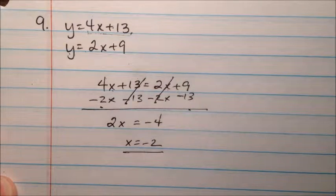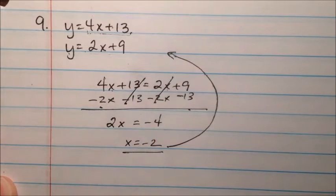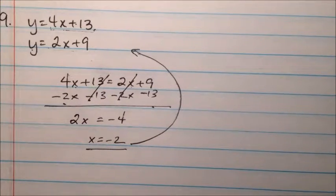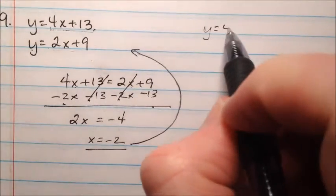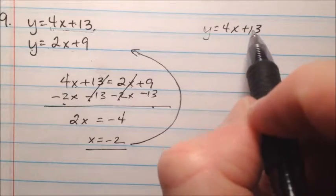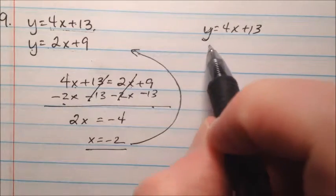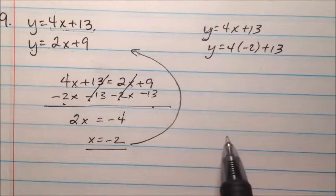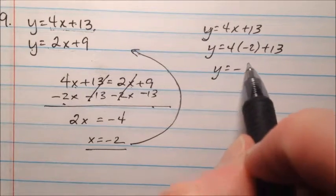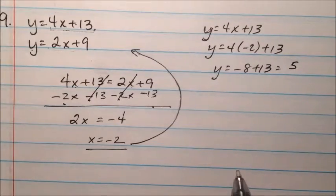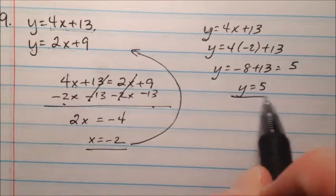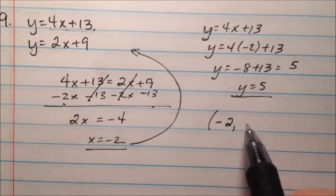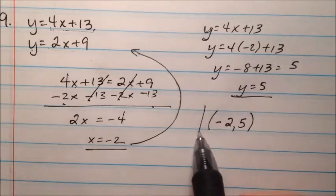Now that we have the value for x, we can go ahead and plug that back into one of those equations. So if y equals 4x plus 13, we can put negative 2 in for x, and we get 4 times negative 2 plus 13, which will be negative 8 plus 13, which is 5. So our solution will be the ordered pair negative 2, 5.